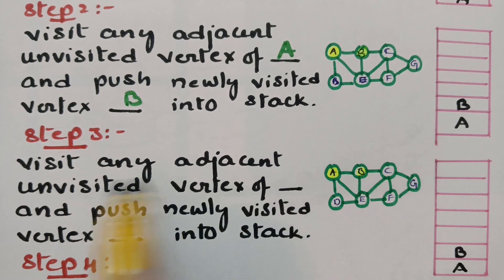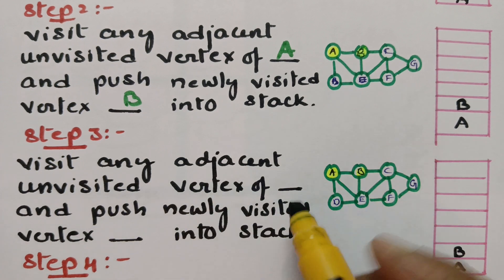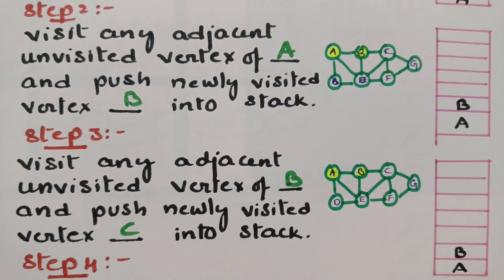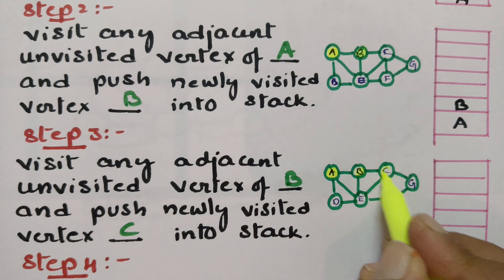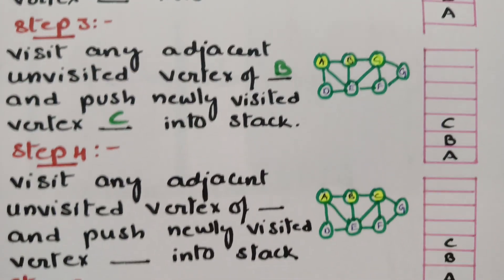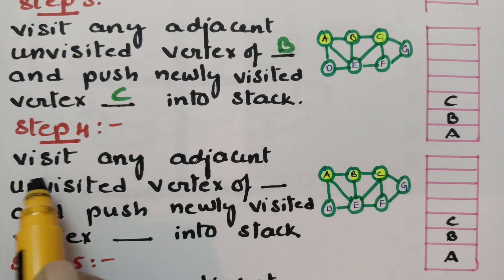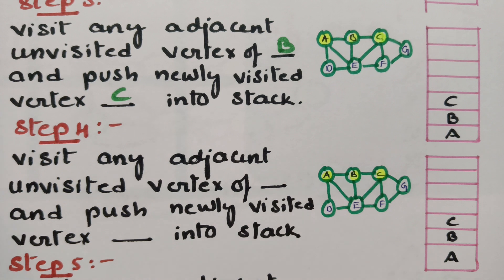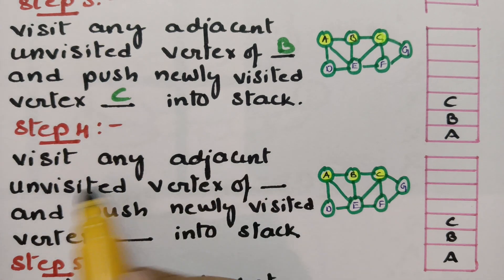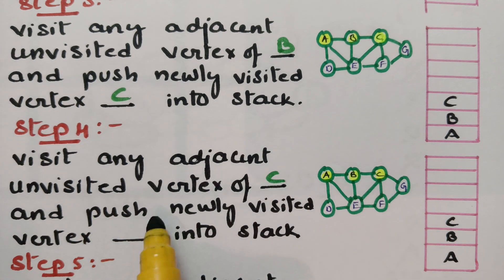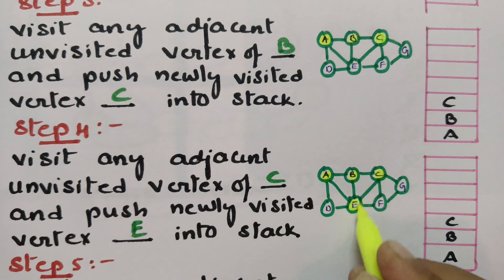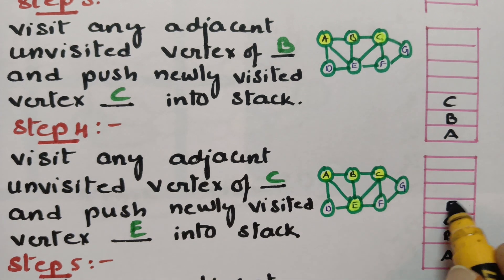Step 3: From B, visit any adjacent unvisited vertices. The unvisited vertex is C, so push the newly visited vertex C into the stack. Step 4: From C, visit any adjacent unvisited vertex. I am choosing E. Visit adjacent unvisited vertex E of C and push E into the stack.